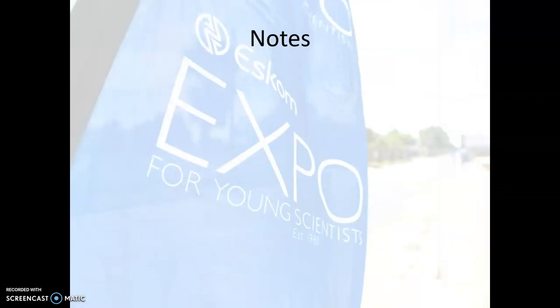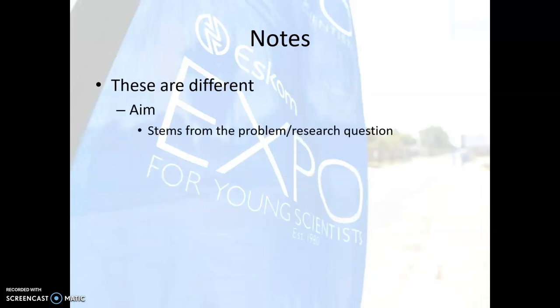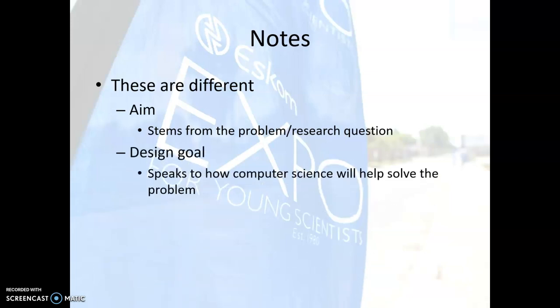A note about two things that are different and can sometimes be confused: the aim, which the learner writes, will stem from the problem or research question. The design goal, on the other hand, will speak to how computer science — in one or other of those subcategories — will help solve the problem.